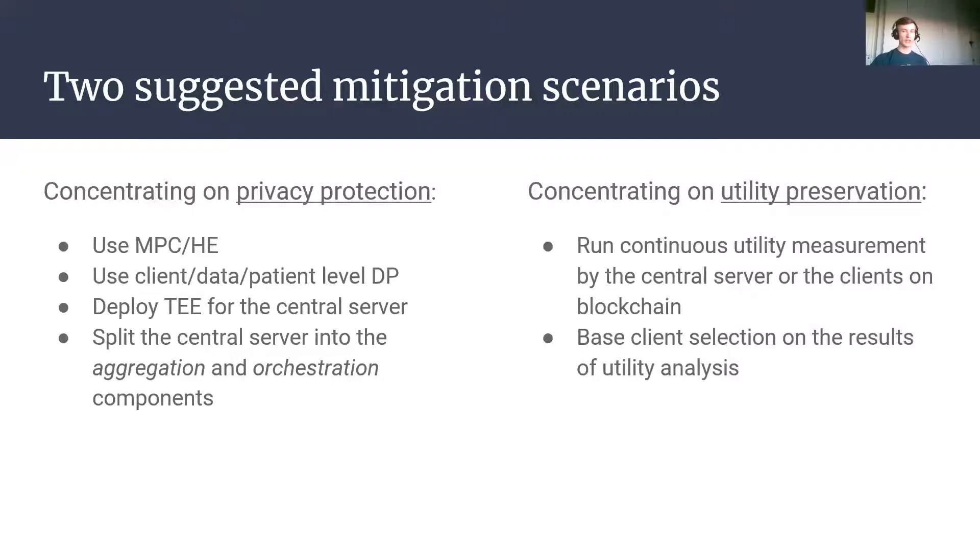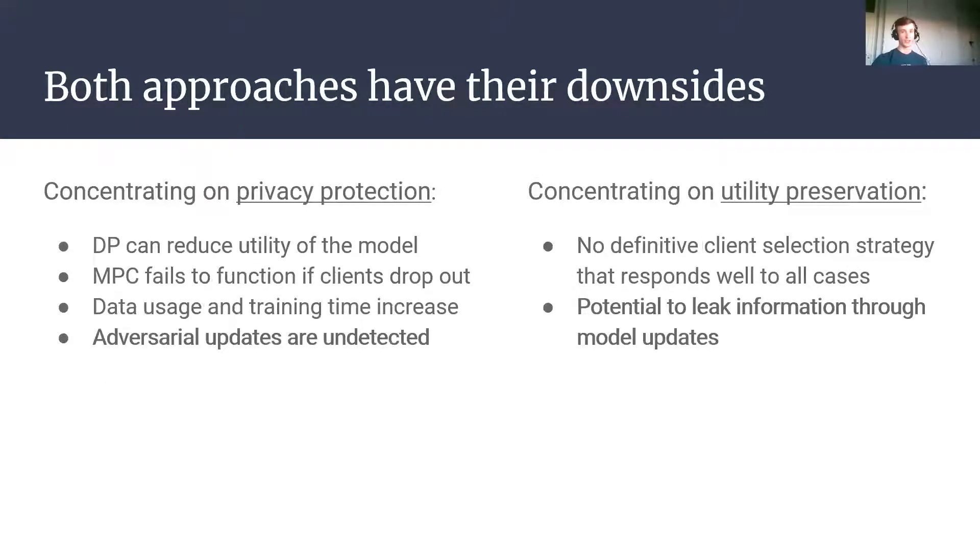However, when we try to preserve the accuracy of the end model, we could do so at the expense of privacy, because we could run a continuous utility function to measure the individual contribution of each client in a collaborative learning setting. As you can see by design, there are issues with trying to prevent both from being attacked. If you concentrate on privacy, you almost always end up losing the utility. However, if you concentrate too much on the utility, you could accidentally leak too much data and open a large number of reconstruction and inference attacks that we've just discussed for the adversary.